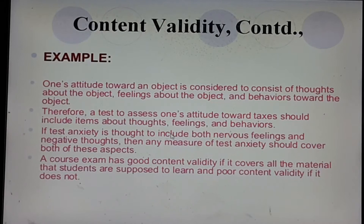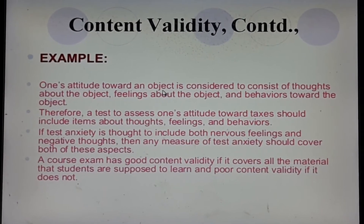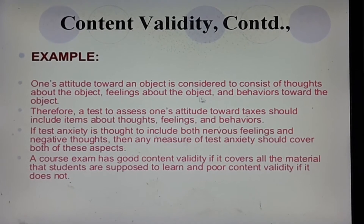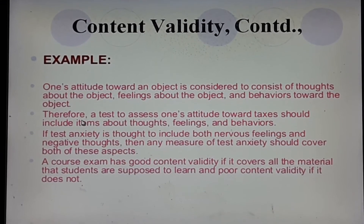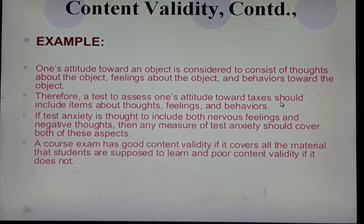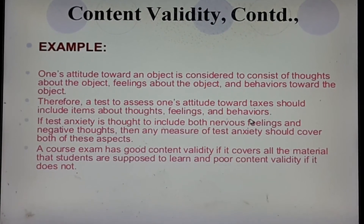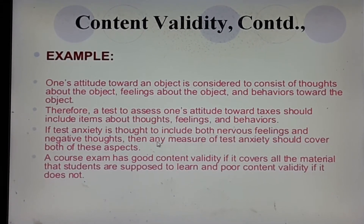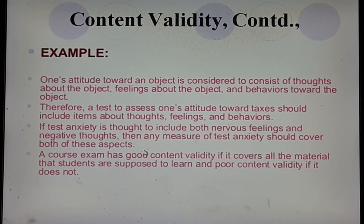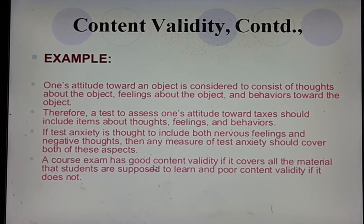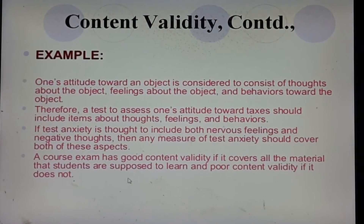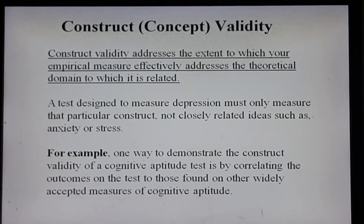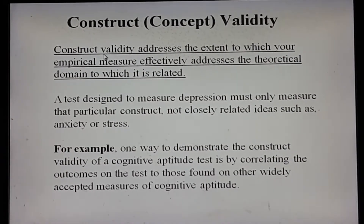For example, one's attitude toward an object is considered to consist of thoughts about the object, feelings about the object, and behaviors toward the object. Therefore, a test to assess one's attitude toward taxes should include items about thoughts, feelings, and behaviors. If test anxiety includes both nervous feelings and negative thoughts, then any measure of test anxiety should cover both aspects. A course exam has good content validity if it covers all the materials students are supposed to learn, and poor content validity if it does not.